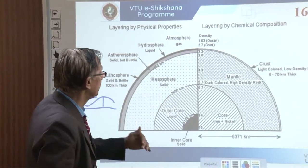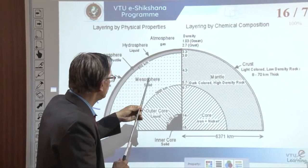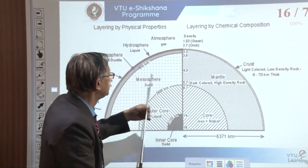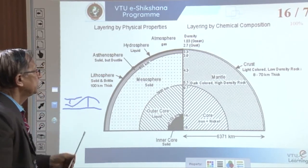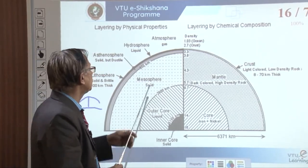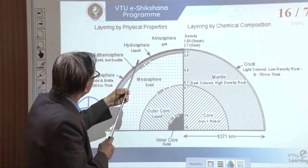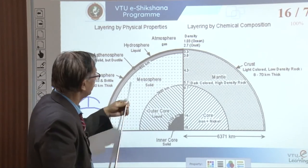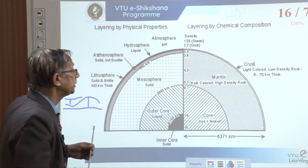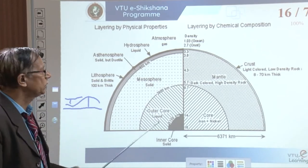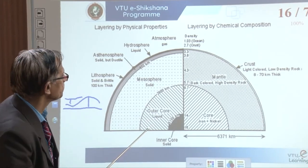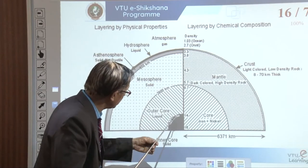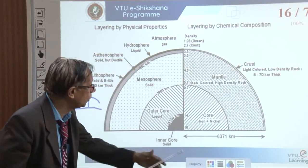Going further into the interior, we are interested in the mesosphere, also called the mantle. The crust is solid; below it is ductile material; further still is another solid layer about whose nature we are less certain. And inside further we have the core.